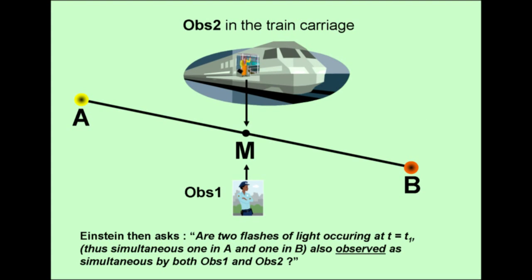For convenience, let us introduce two laser pulses instead of the lightning bolt strokes. One laser pulse is fired from location A in the direction of M at time instance T1. The other laser pulse is fired from location B in the direction of M, also precisely at time instance T1. Both laser pulses are thus fired simultaneously.